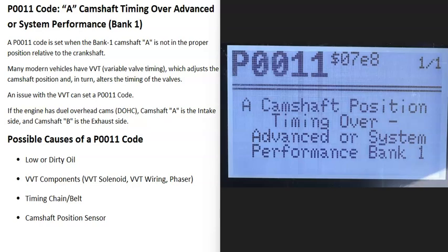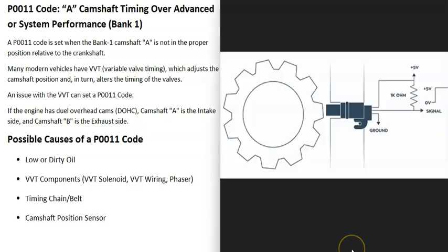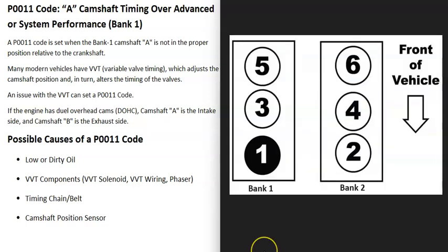Today I'm talking about a P0011 code — what it is and how you could go about fixing it. A P0011 code is an 'A camshaft position timing over-advanced or system performance bank one.' Basically, there's a camshaft position sensor that's monitoring the camshaft as it spins, and for some reason this sensor is reporting back to the computer that the timing's off on that camshaft. It's got to be troubleshot to know why.